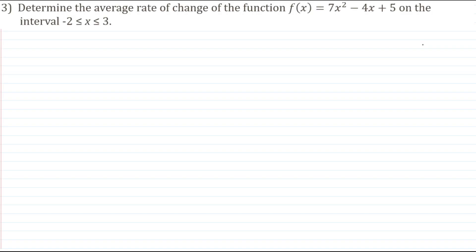Alright, let's take a look at how we can find the average rate of change for a function when given the function's equation. So we have our function here, f(x) = 7x² - 4x + 5, and we're asked to find the average rate of change of that function on the interval -2 to 3.